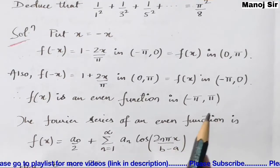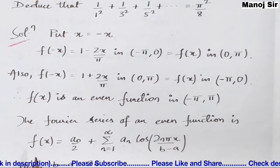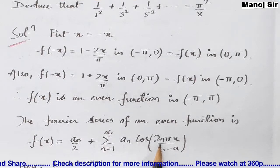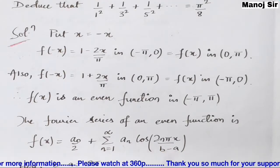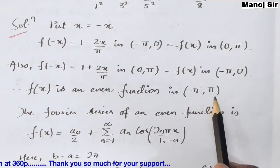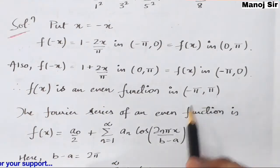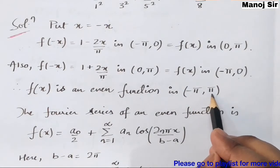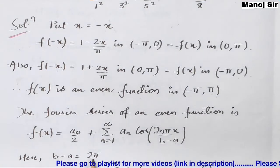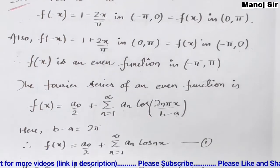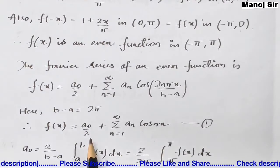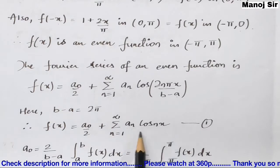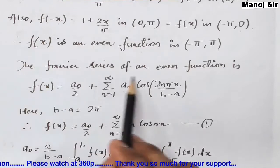Since the function is even, bₙ = 0. The Fourier series of an even function is given by f(x) = a₀/2 + Σ(n=1 to ∞) aₙ cos(2nπx / (b−a)). Since the limit is from minus π to π, b − a = π − (−π) = 2π, so this simplifies to f(x) = a₀/2 + Σ(n=1 to ∞) aₙ cos(nx). This is equation (1).